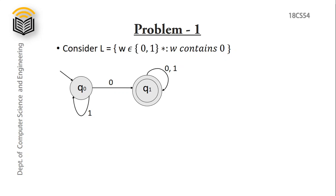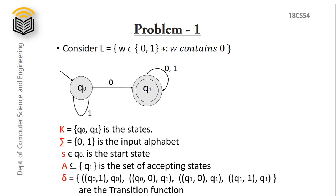Now let's see the 5-tuples. K is the set of states — here we have 2 states, q0 and q1. Sigma is the alphabet set: 0 and 1. S is the starting state, that is q0. A is the subset of K containing only accepting states — here we have only q1. Delta, the transition function: q0 upon 1 remains on q0; q0 on 0 transitions to q1; q1 upon 0 remains on q1; and q1 upon 1 also remains in q1.